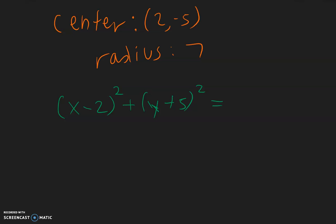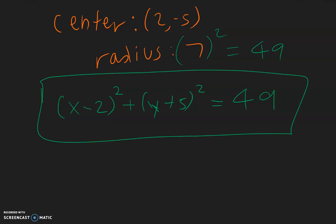Now the right side is going to be the radius squared. Right now the radius is 7, so r squared, 7 squared, is going to be 49. And that is the equation of the circle.